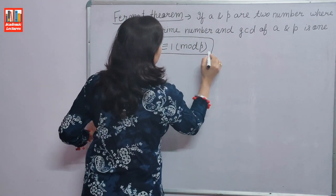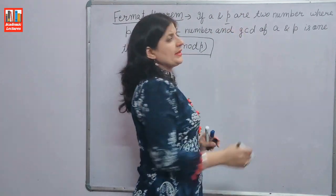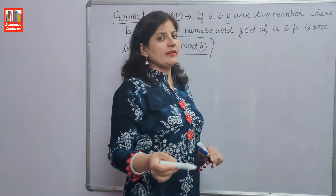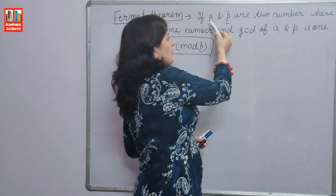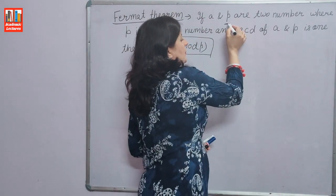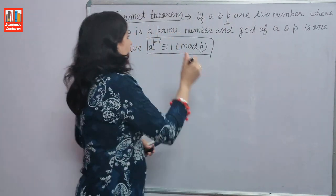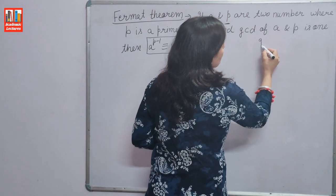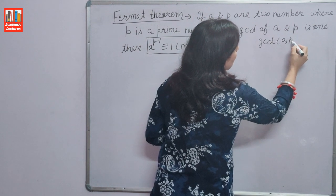So, what is the theorem? If A and P are two numbers, the condition is: where P is a prime number. A can be any number — prime or composite. But the condition is on P: P is a prime number and GCD of A and P is 1. The condition is that the GCD of the two numbers should be 1.